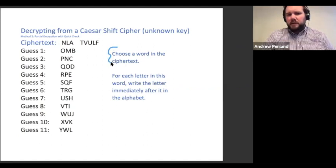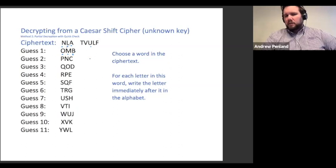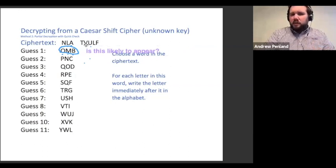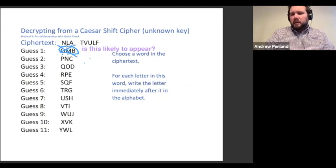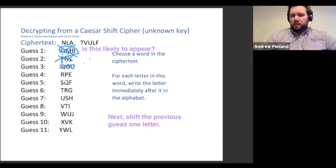The way that this method works is you choose a word in the ciphertext, and then for each letter in the word, write the letter immediately after it in the alphabet. Here I am trying to decrypt the ciphertext N-L-A-T-V-U-L-F. I'm going to take N-L-A and for each letter, go forward one letter, and I get O-M-B. Now I ask myself: do I think this is likely to appear in the plaintext? I don't recognize this as a string of letters that typically occurs in English, especially as a word, so I rule it out. Then I shift my previous guess one letter forward: after O comes P, after M comes N, after B comes C. I ask, do I think that's a word? No. Q-O-D is next, and I just keep repeating this.